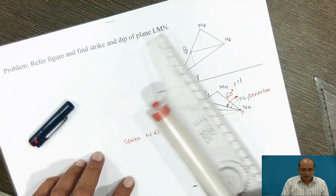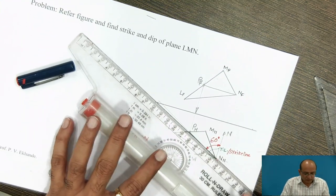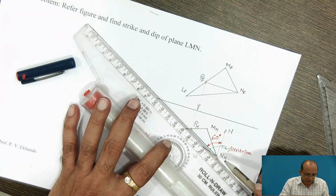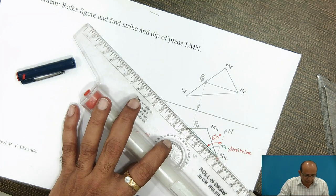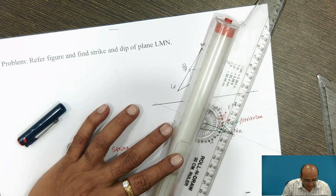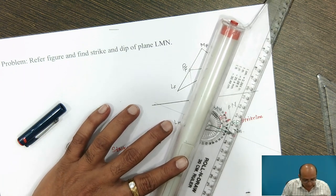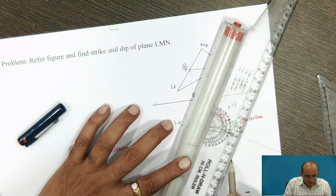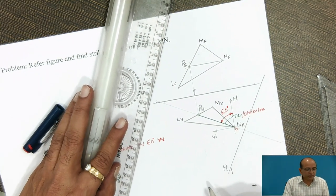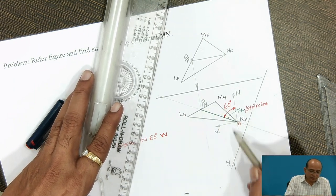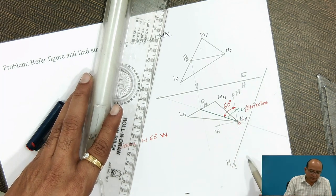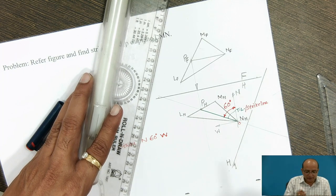To get the dip angle and dip direction we must draw a line perpendicular to this strike line to get the edge view of the plane, because dip angle can be obtained only when the plane is shown as an edge view. This reference line drawn perpendicular to the strike line is the H1 line — H1 because it is the intersection of the horizontal plane and auxiliary plane number 1.